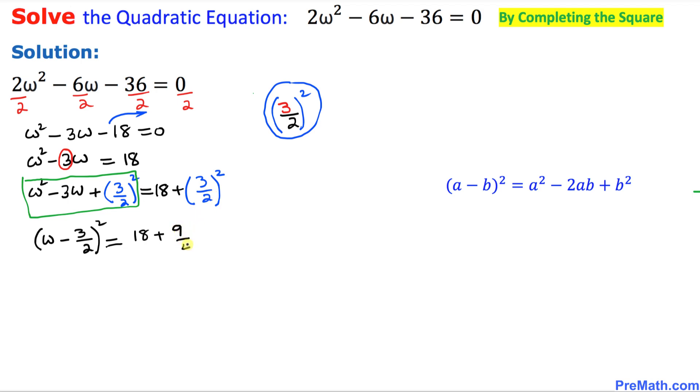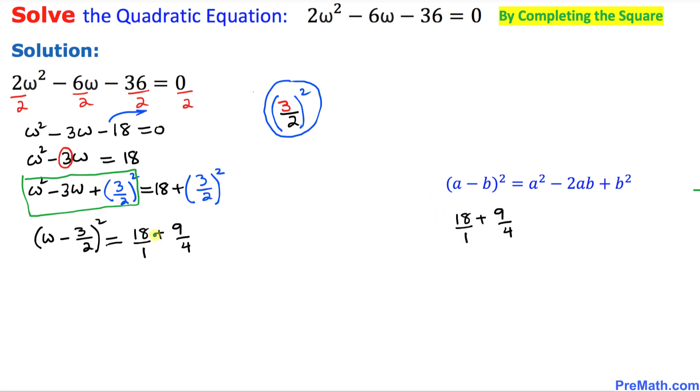I can write 18 as 18/1. Let's simplify by cross-multiplying: 4 times 18 is 72, plus this sign, and then 9 times 1 is 9.